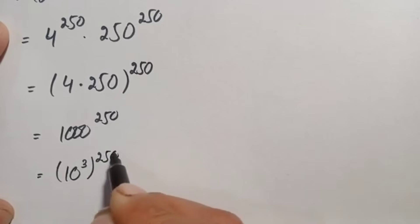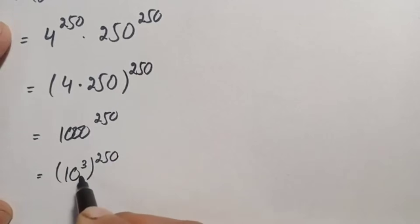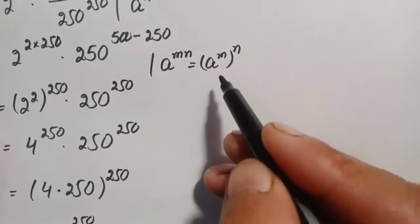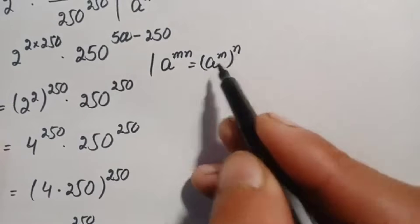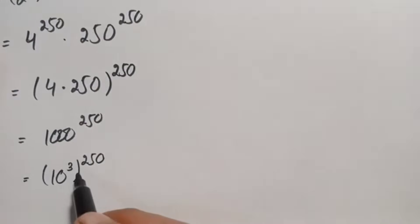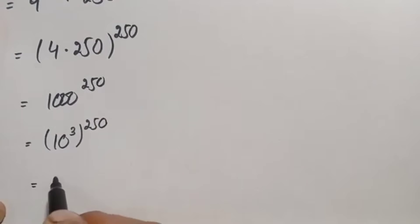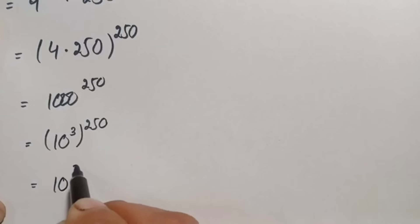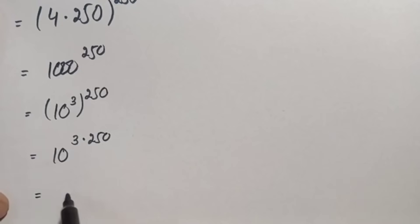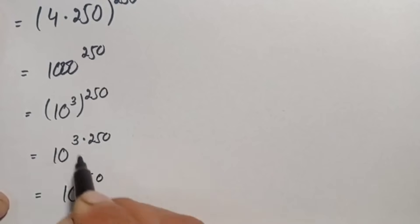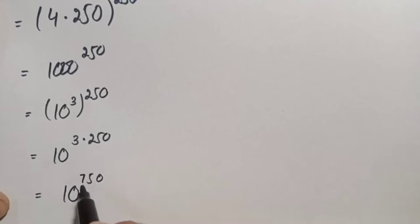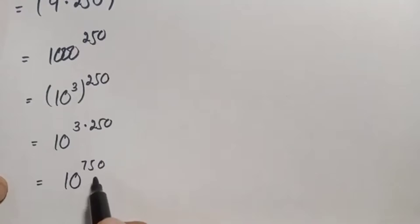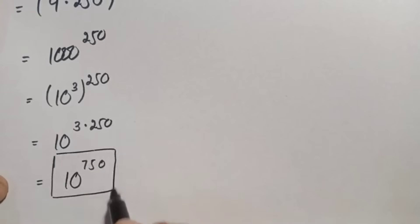We will change 1000 to its exponential form, so therefore we can write 1000 as 10 cubed, all raised to power 250. Now here we will use the exponential identity and multiply the powers, so this will become 10 raised to power 3 times 250. 3 times 250 is 750, so this gives 10 raised to power 750. So finally, 10 raised to power 750 is our answer.